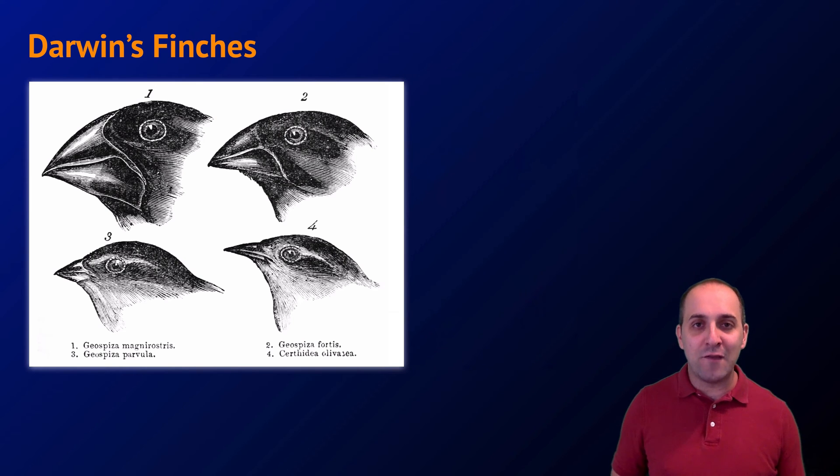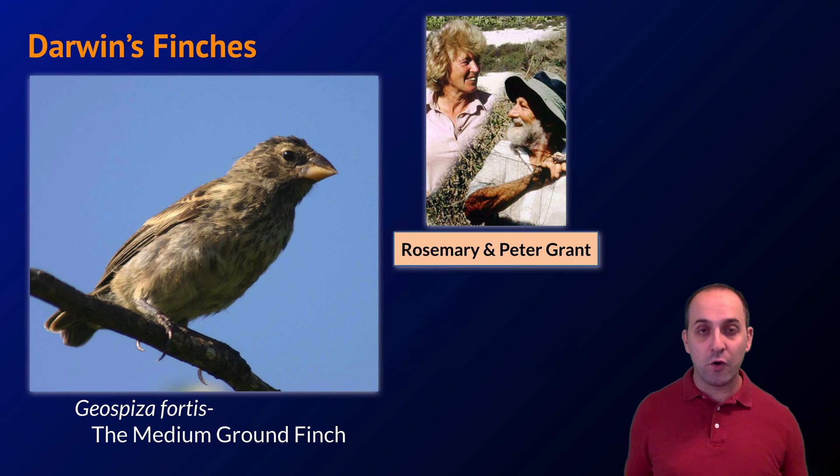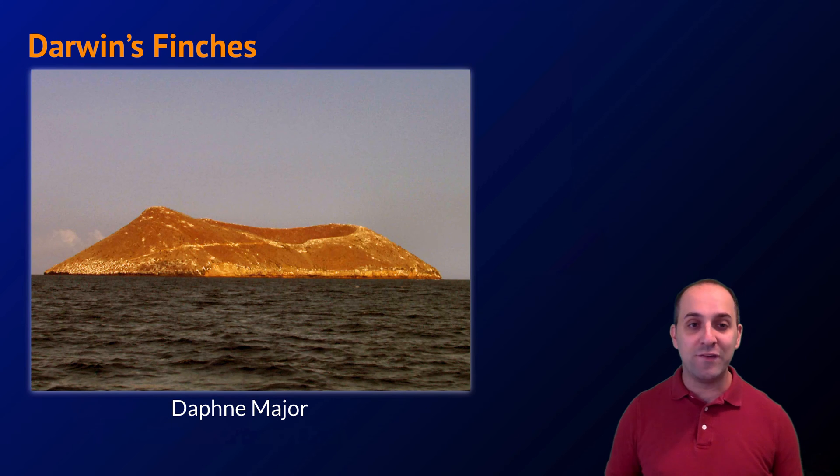For our second example, let's go to an organism that we actually can see as individuals, a group of birds that live on the Galapagos Islands known as Darwin's finches. There are more than 10 different species of Darwin's finches, which are classified based on the shape of their beaks, where they live, and what they eat. We're going to focus on one particular species, which is the medium ground finch. And we're going to look at ongoing research that's being done by Rosemary and Peter Grant on an island in the Galapagos called Daphne Major.